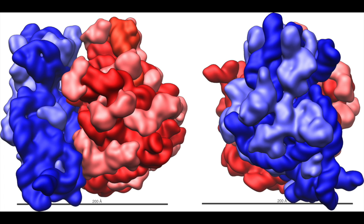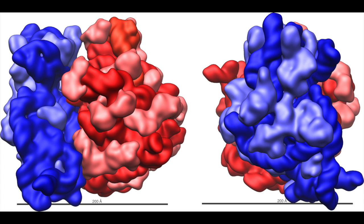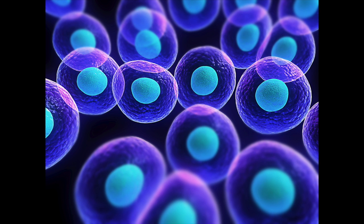The ribosomes translate RNA into proteins. RNA is similar to DNA in the fact that it holds some genetic material. Ribosomes look like tiny dots.